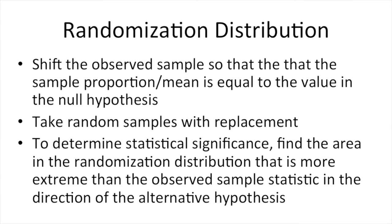Now that we have our hypotheses written, we can construct a randomization distribution, which we'll use to determine the probability that our sample came from a population with the given hypothesized parameter. To do this, we shift the observed sample so that the sample proportion or sample mean equals the value in the null hypothesis — so this distribution is constructed under the assumption that the null is true. Then we take random samples with replacement, just as in bootstrapping. Finally, to determine statistical significance, we find the area in the randomization distribution that is more extreme than the observed sample statistic in the direction of the alternative hypothesis.